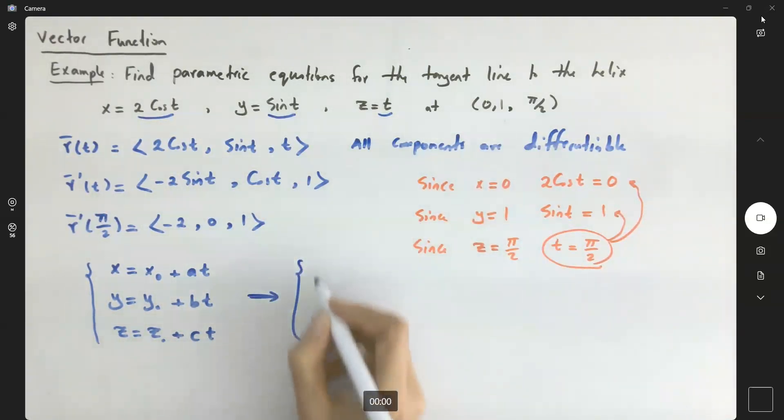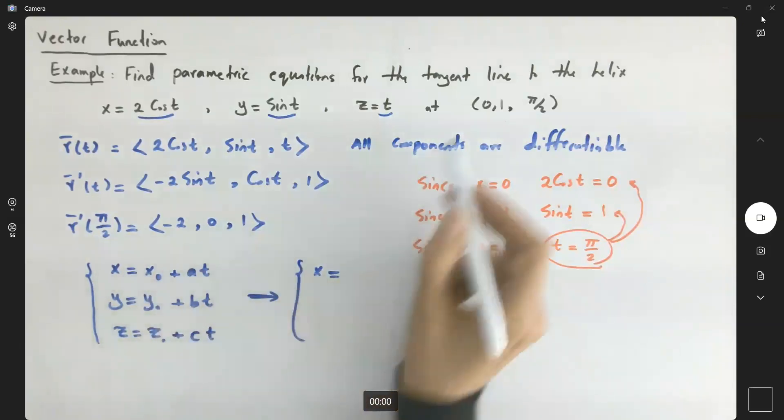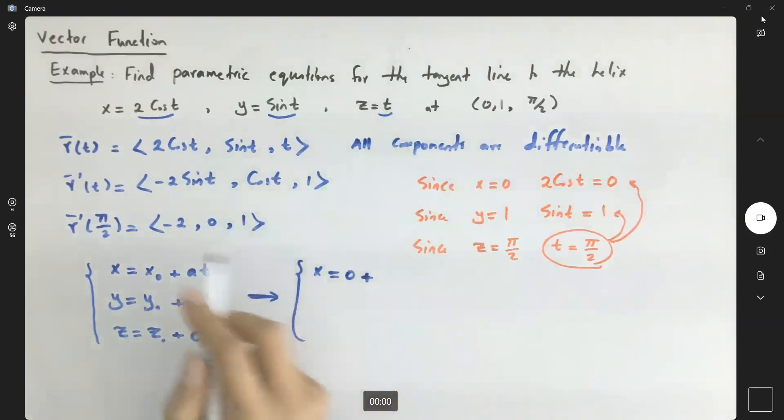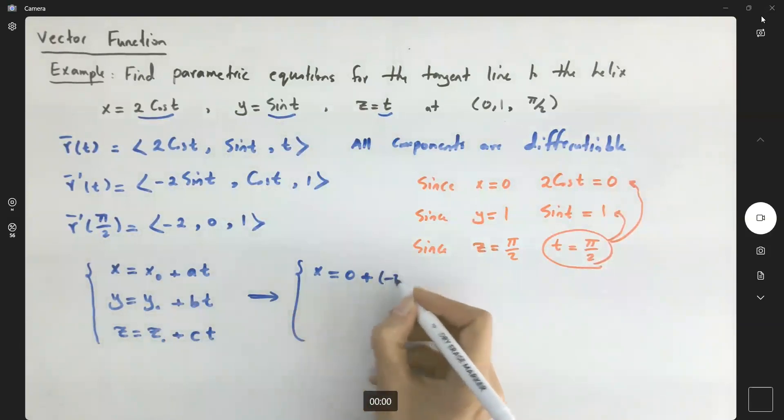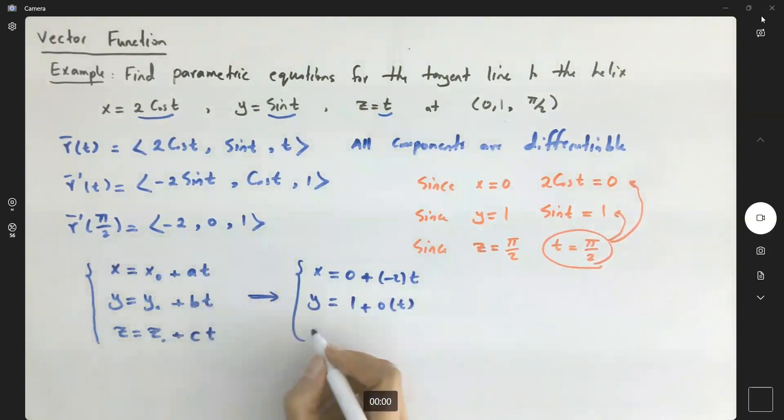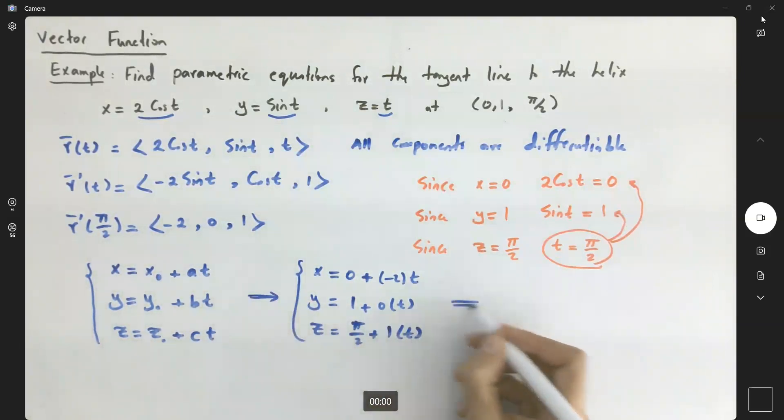So this equation becomes x equal to x₀ is 0 plus negative 2 times t. And we're going to simplify that: y is equal to 1 plus 0t, and z is equal to π/2 plus 1t, or x is negative 2t, y is 1, and z is π/2 plus t.